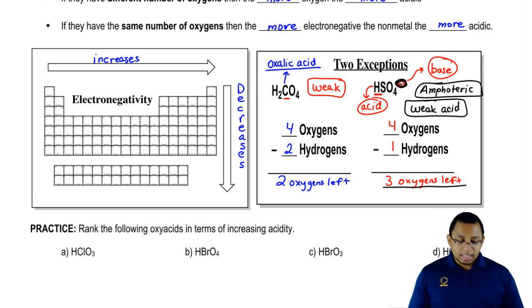Now that you guys have seen this, I want you guys to attempt to do the practice question left on the bottom of the page. Rank the following oxyacids in terms of increasing acidity. So remember, what do we look at? First we look at the number of oxygens. If they're tied, then we look at electronegativity. Use those two factors to determine the correct order. Good luck guys.